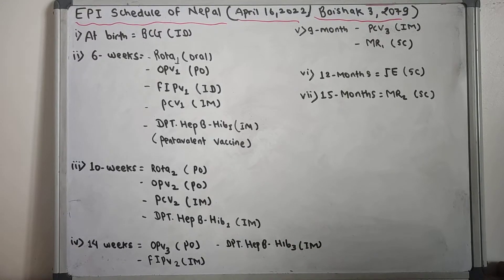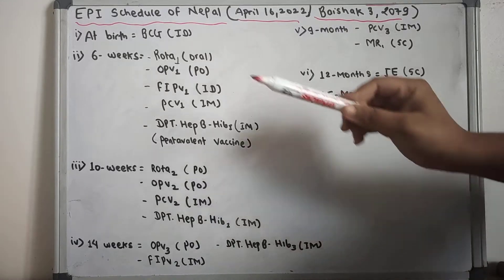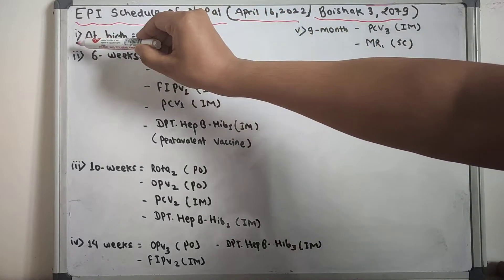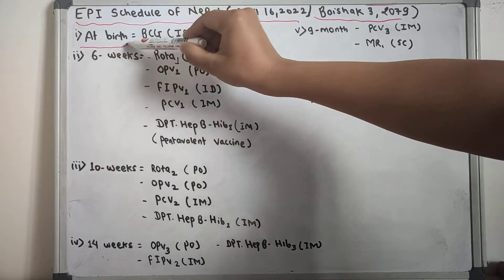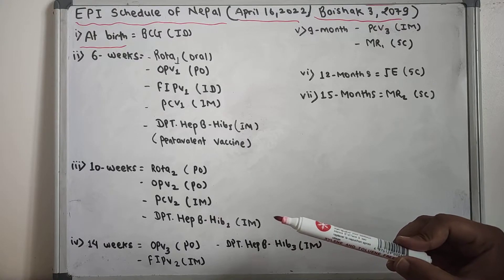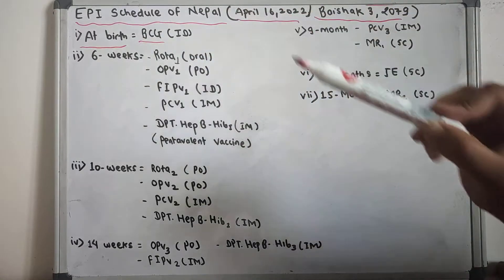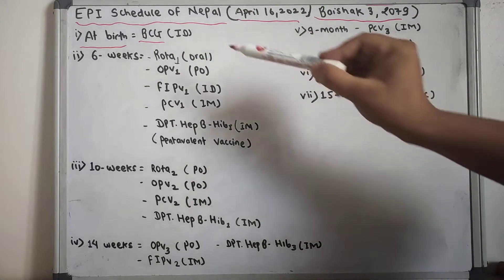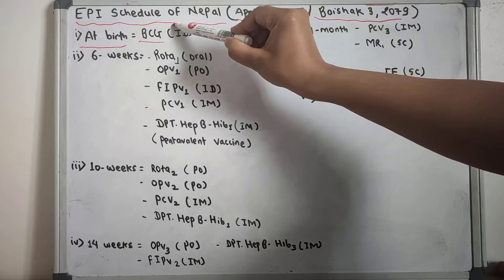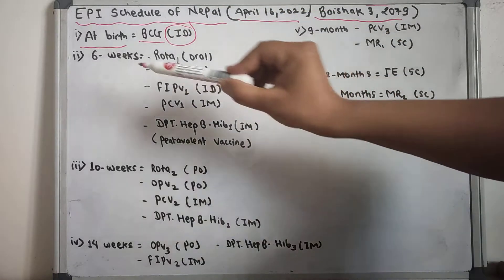First of all, at birth, according to the EPI schedule of Nepal, we give the BCG vaccine, which is given intradermally.